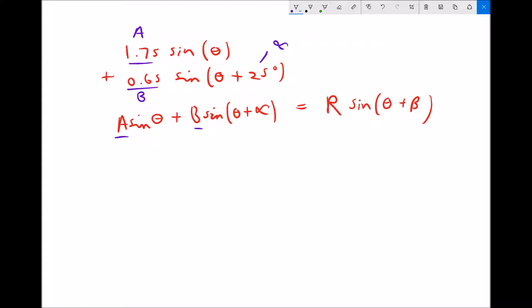So first of all we're going to calculate R, which is the amplitude of the new function. And R equals the square root of a² plus b² plus 2ab cos(α), and it's the square root of all of that. This formula here has come from your equations and information sheet, so you have access to that. There's no need to memorize it.